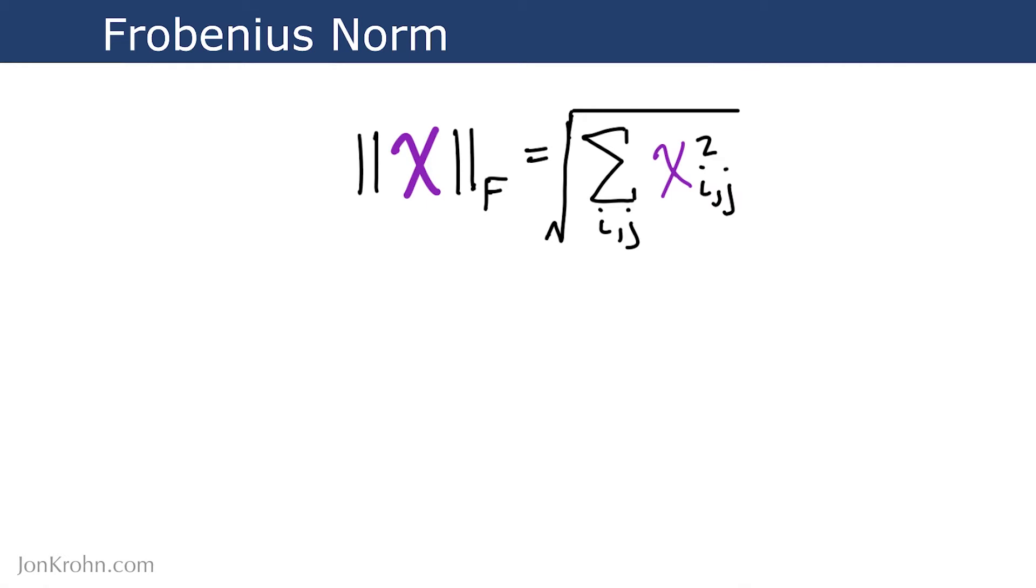We'll use a hands-on code demo in NumPy to solidify our understanding of the topic. The Frobenius Norm is described by this equation here. It looks maybe a little complicated at first glance, but I promise you it's really easy, and you'll see that especially when we get into the hands-on code demo coming up.